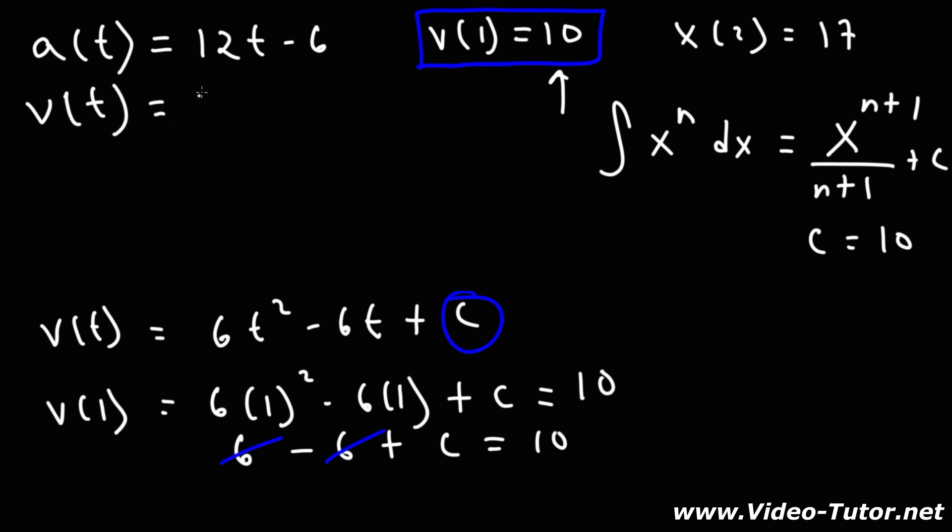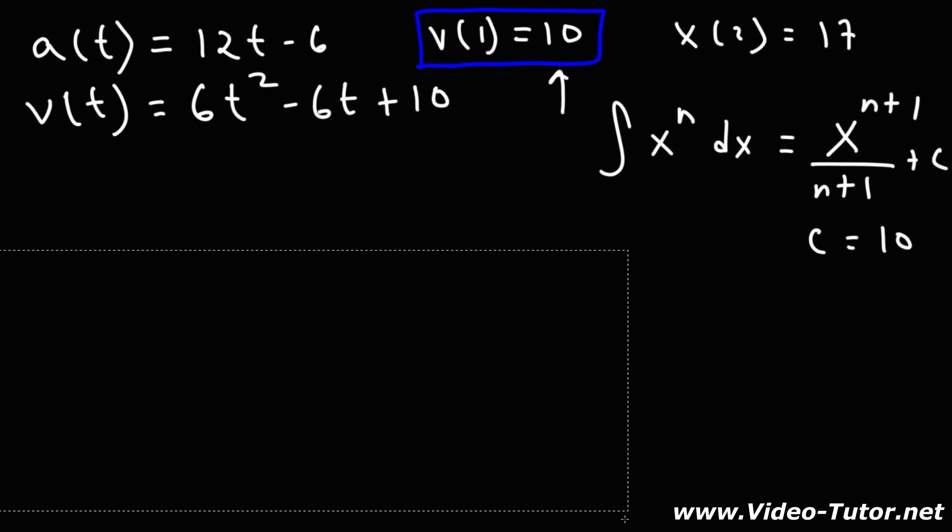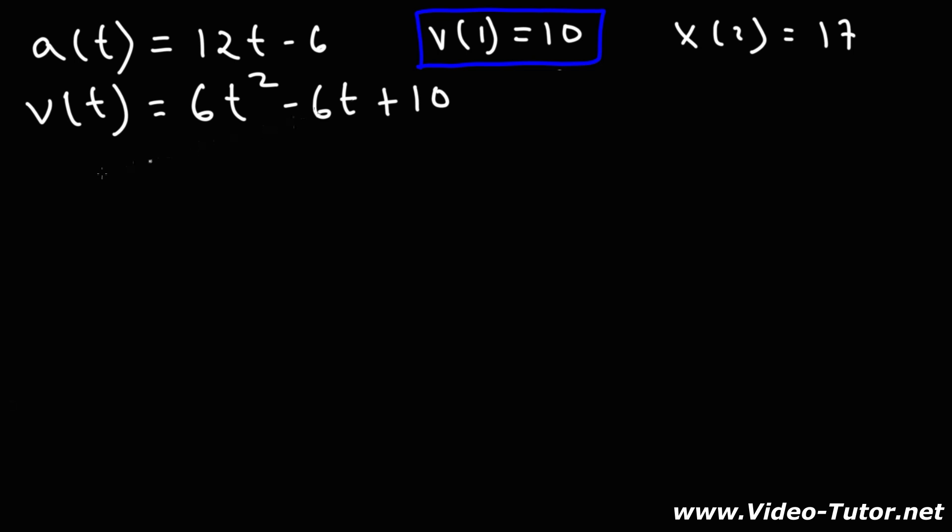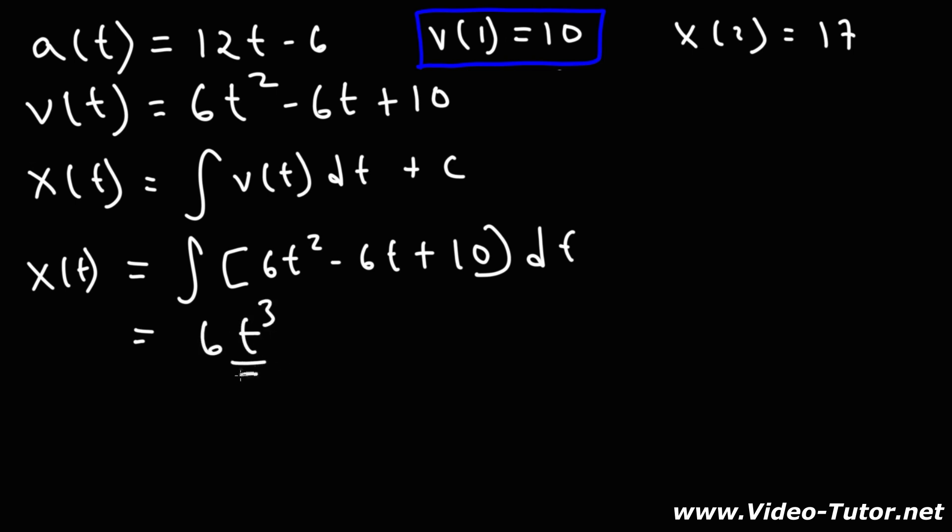So the first answer for this problem is this one. The velocity function is 6t squared minus 6t plus 10. So now that we have that, we can now calculate or determine the position function. So the position function is going to be the integral of the velocity function. And so that's going to be the integral of 6t squared minus 6t plus 10. So this is going to be 6, and then we're going to have t to the third over 3. The antiderivative of t to the first power will be t squared over 2.